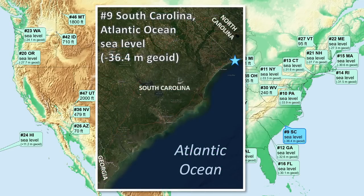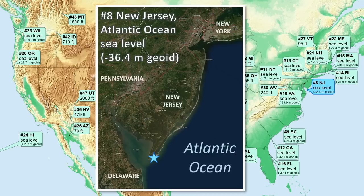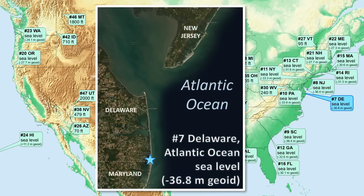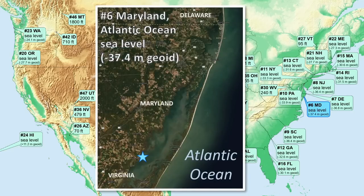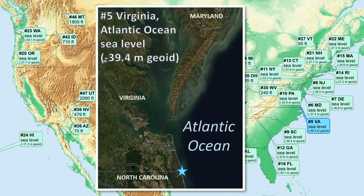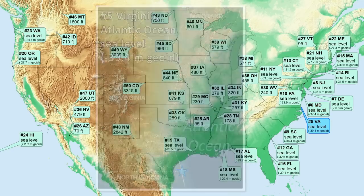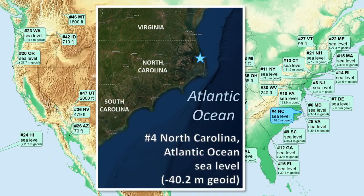Number 9 is South Carolina. Number 8 is New Jersey. Number 7 is Delaware. Number 6 is Maryland, in an impressive lagoon and barrier island system. Number 5 is Virginia. Number 4 is North Carolina, the lowest of these coastal sea-level geoid points, near where the continental shelf is thinnest along the eastern passive margin.